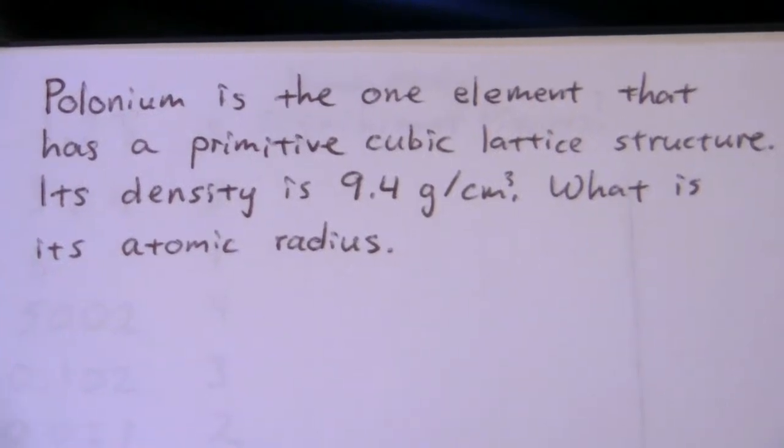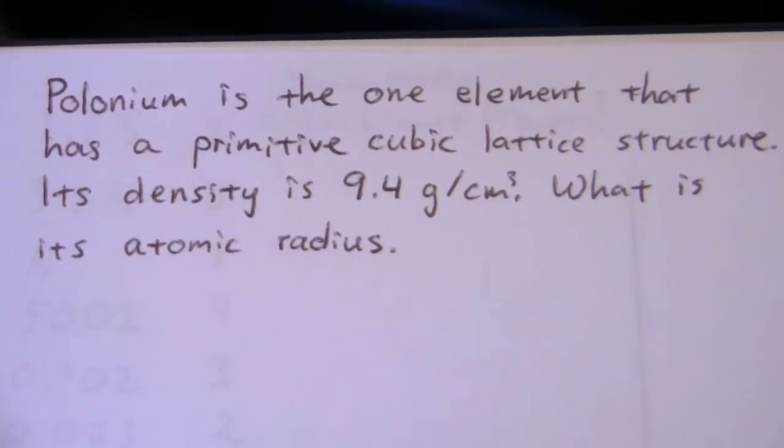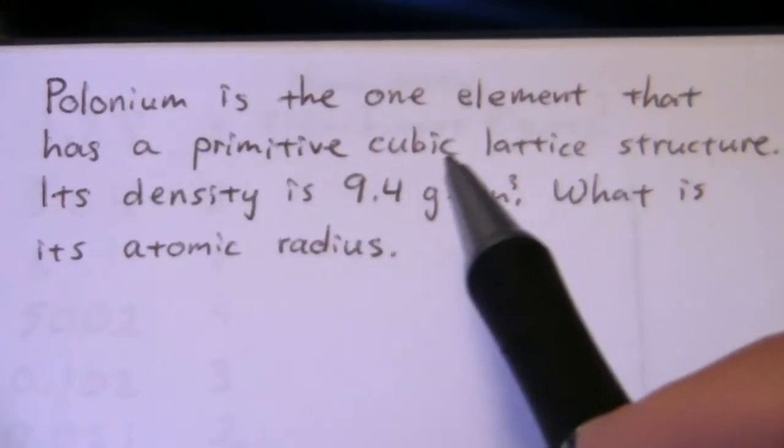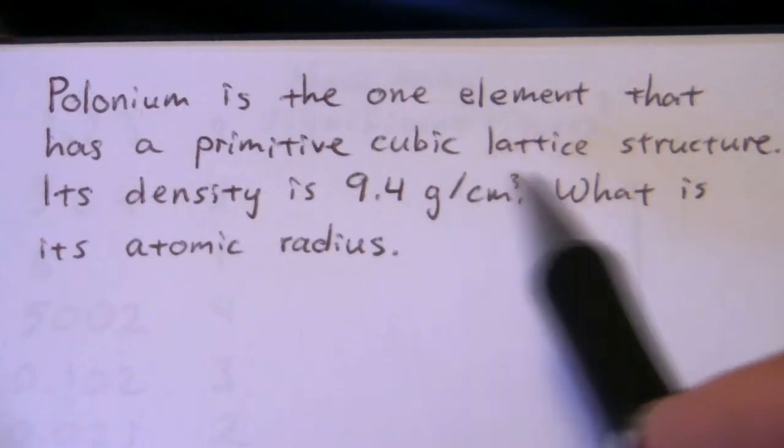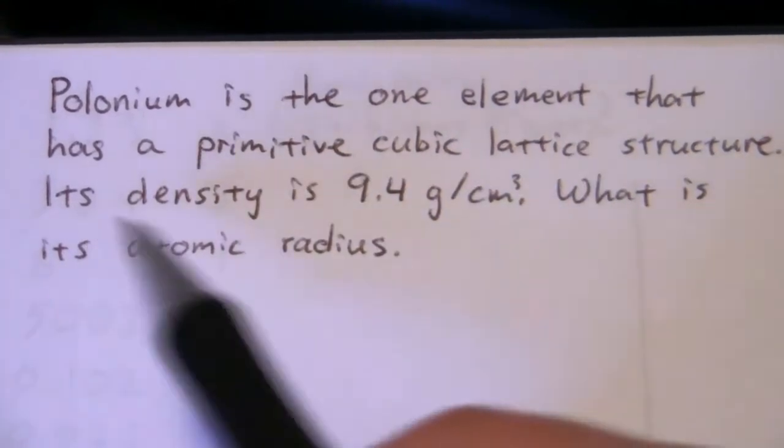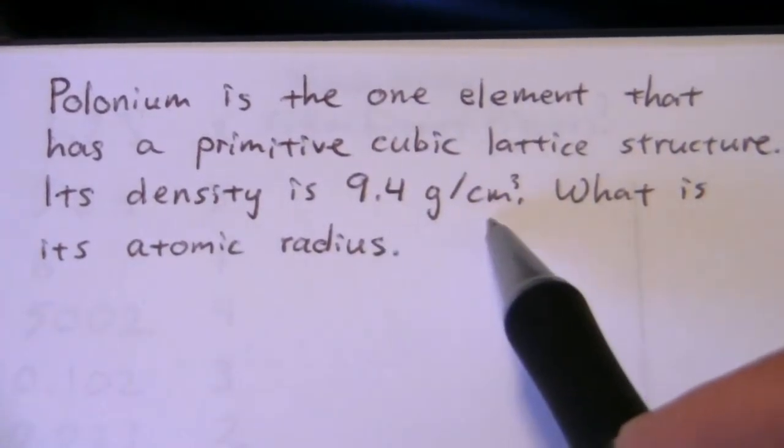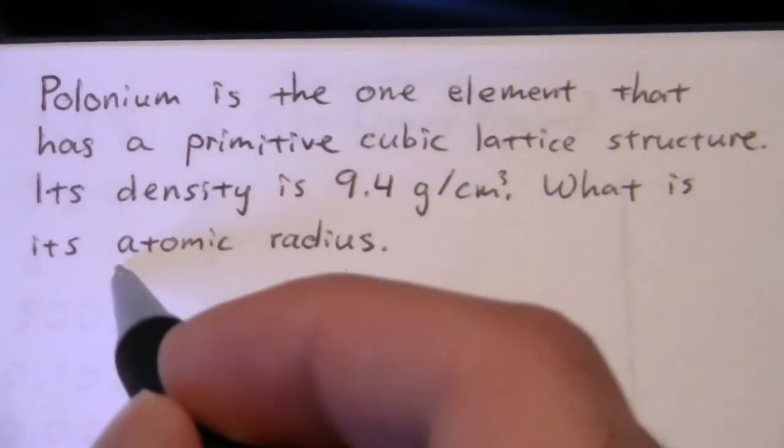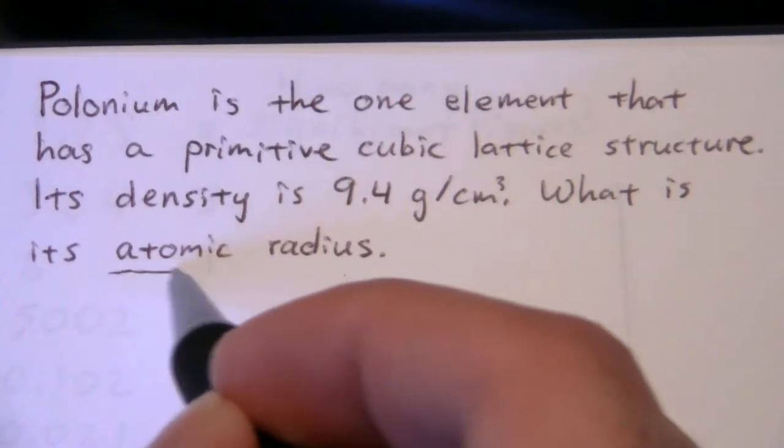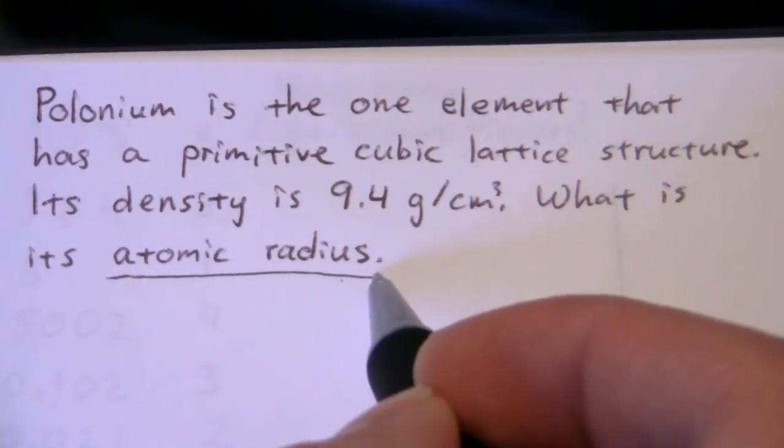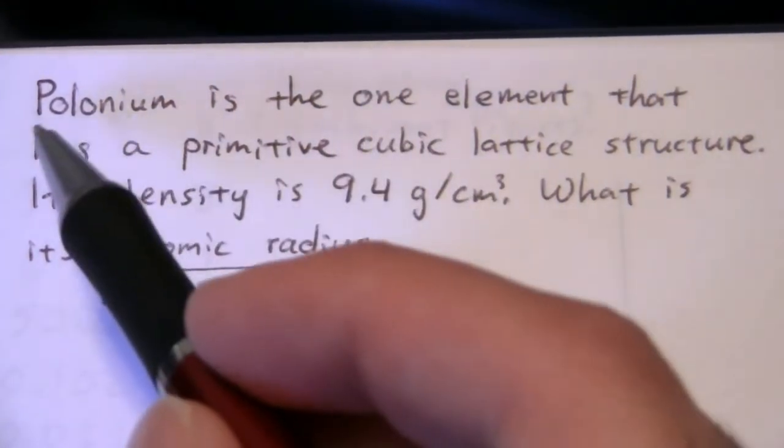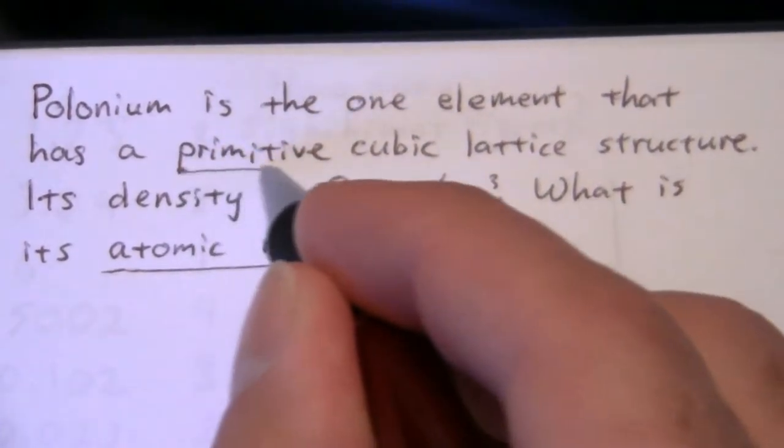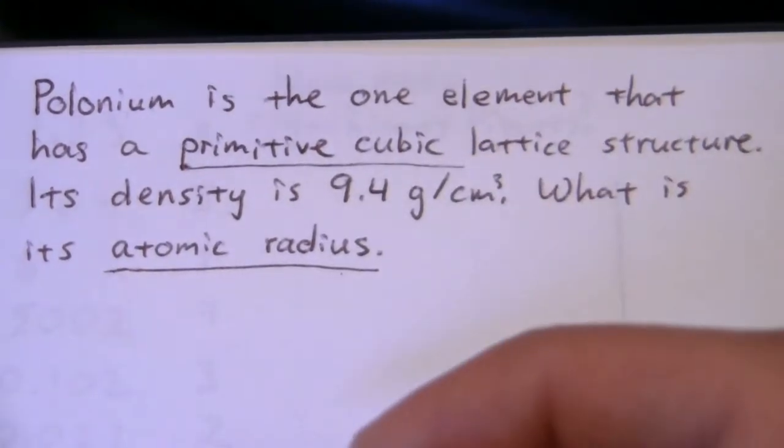This is question number six on the chapter 13 discussion questions. It says polonium is the one element that has a primitive cubic lattice structure.